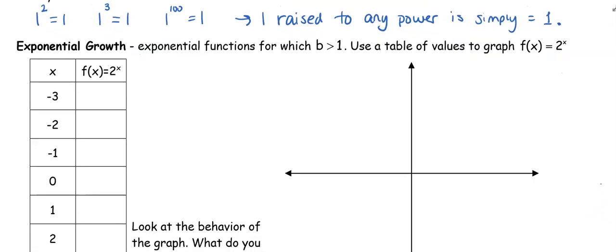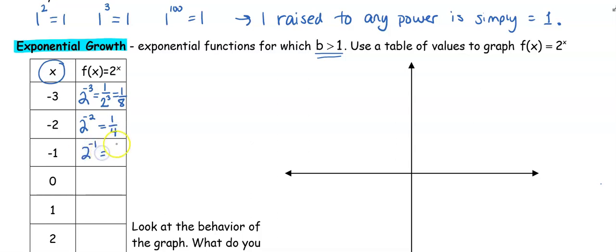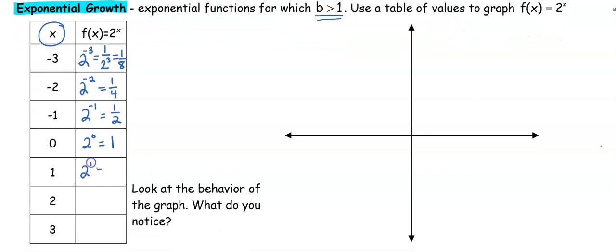Now if our function is an exponential growth function, our base is going to be greater than one. We have the function f(x) equals 2 to the x power, meaning x is the exponent. If I raise 2 to the negative third power — remember, negative exponents mean reciprocal — it's really 1 over 2 cubed, which is 1/8. So 2 to the negative second is 1/4, 2 to the negative first is 1/2, anything to the 0 power is 1, 2 to the first is 2, 2 squared is 4, and 2 cubed is 8.